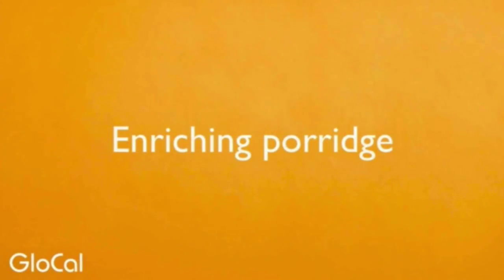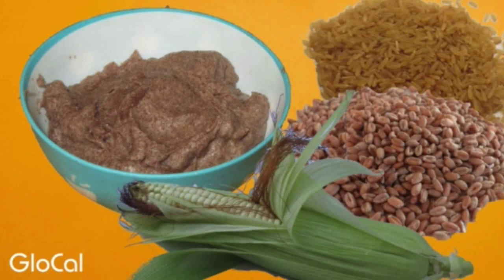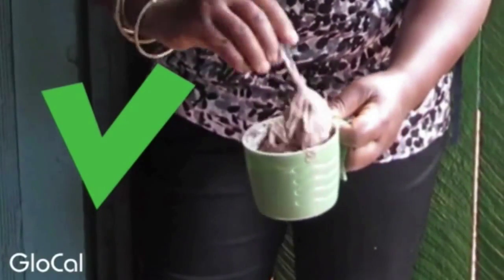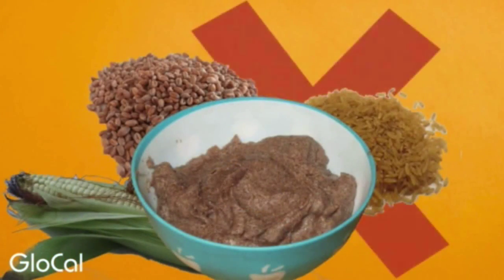Enriching porridge. Complementary foods usually consist of a staple food like a porridge made of sorghum, millet, maize, or rice. The porridge should be thick enough to feed with a spoon. Too much water in the porridge will fill the baby up before she gets the needed energy and nutrients. Porridge alone is not enough to give your baby all the nutrients she needs.